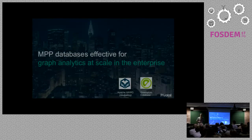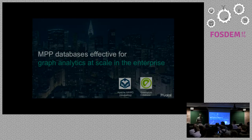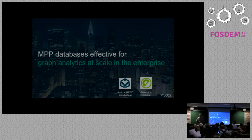I've been working primarily in the area of machine learning on parallel databases for a while. Graph is something that's relatively new for us, at least on products like Greenplum database and Apache Hawk, which are both open source MPP databases. Apache Hawk is similar to Greenplum — it's an MPP on Hadoop.